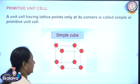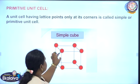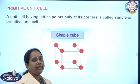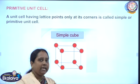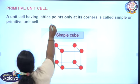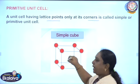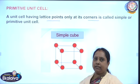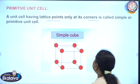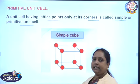The primitive unit cell, also called simple cubic, contains eight corners. These eight corners are occupied by either atoms, molecules, or ions. The lattice points are present only at the corners of the cubic unit — no atoms in the body center or faces. So it is called a simple or primitive unit cell.